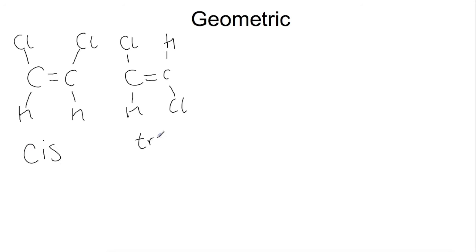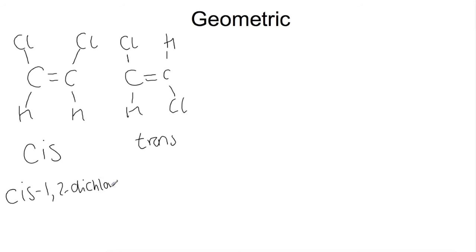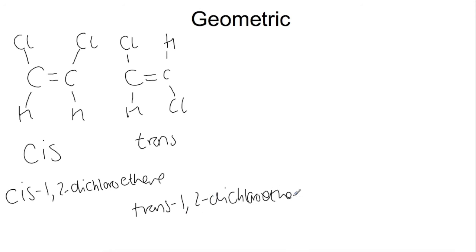When they are on opposite sides of the molecule, this is the trans isomer. So if we're to write the name in full, we'll have cis-1,2-dichloroethene and trans-1,2-dichloroethene.